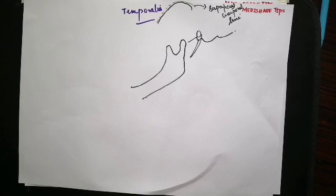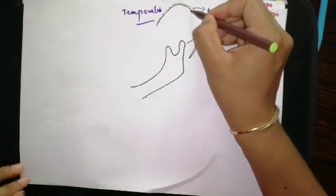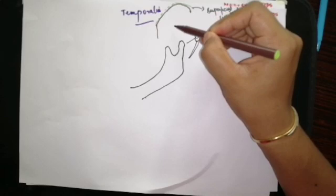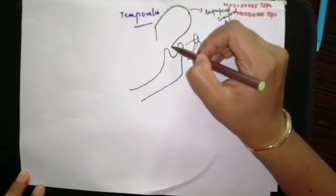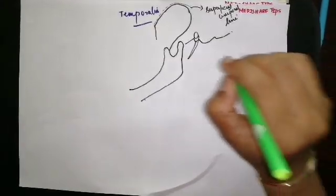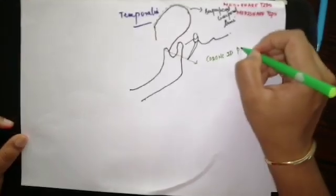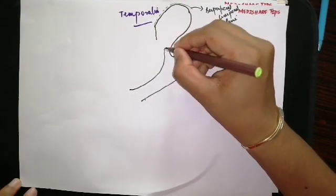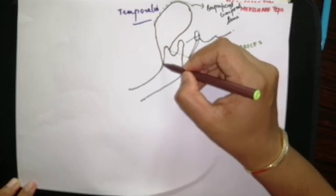The temporalis muscle takes its origin from the temporal fossa. The anterior fibers are vertical, the middle fibers are oblique, and the posterior fibers are horizontal. The muscle passes down and gets inserted into the coronoid process — specifically into the borders and deep surface of the coronoid process and also the anterior border of the ramus of the mandible.